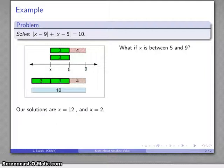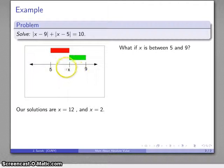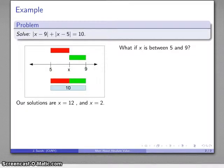My last possibility is maybe x is somewhere between 5 and 9. So I'll draw that. Here's my x, here's the difference to 9, here's the difference to 5. If I put these together, I want to make sure that I have 10. So I glue those two things together.